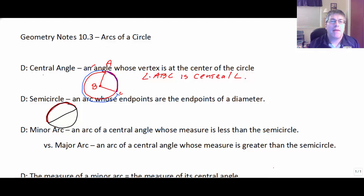So a matter of definition here, a central angle is an angle whose vertex is at the center of the circle. So angle ABC is a central angle. This is circle B.